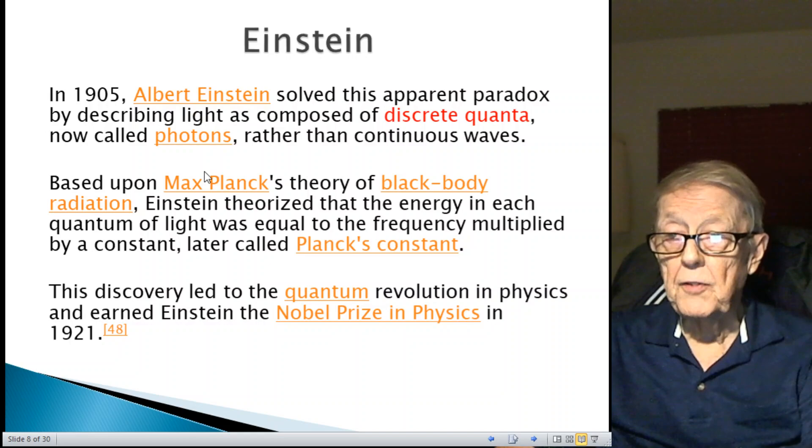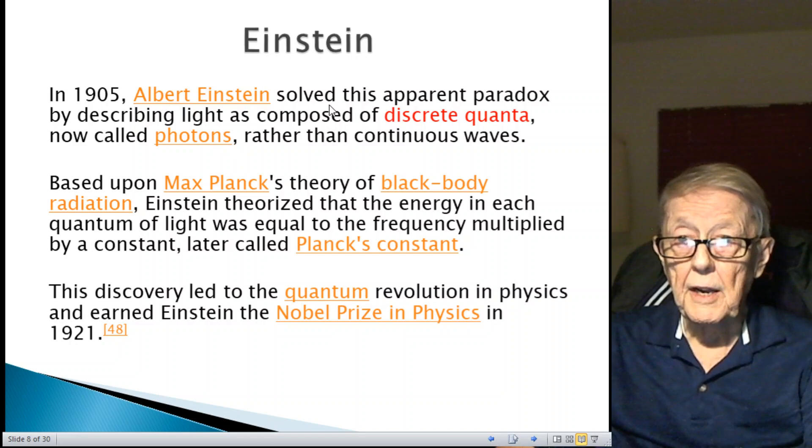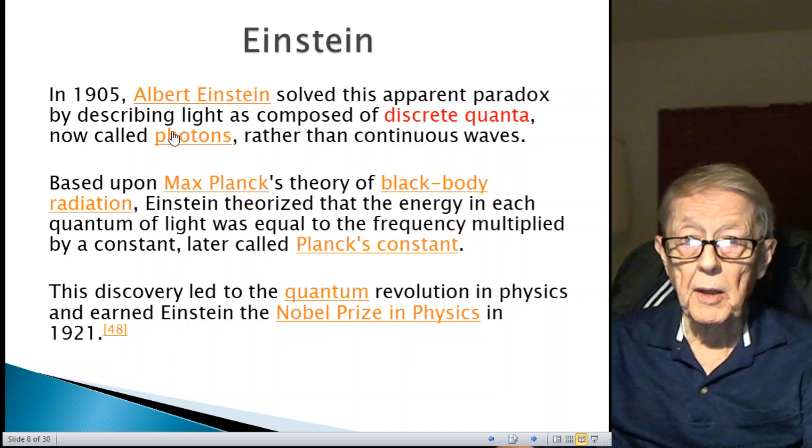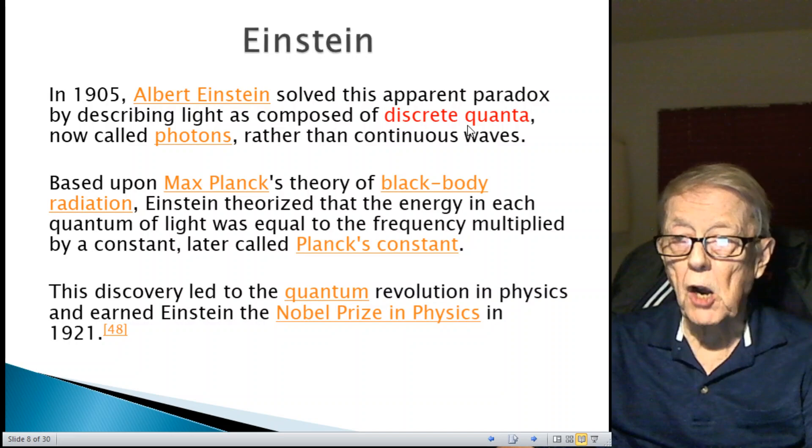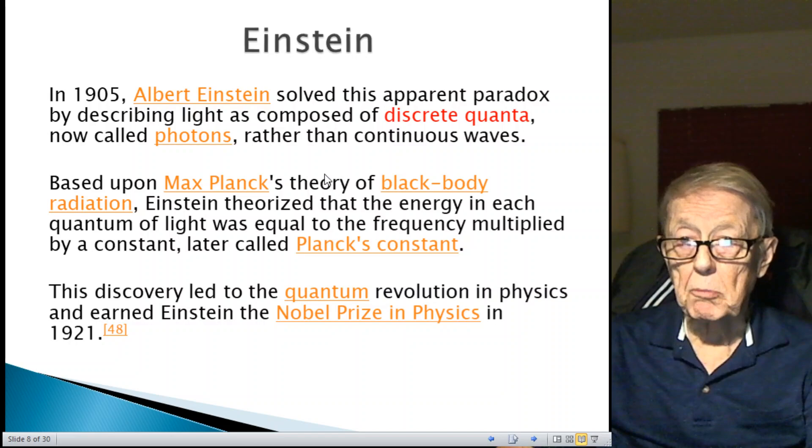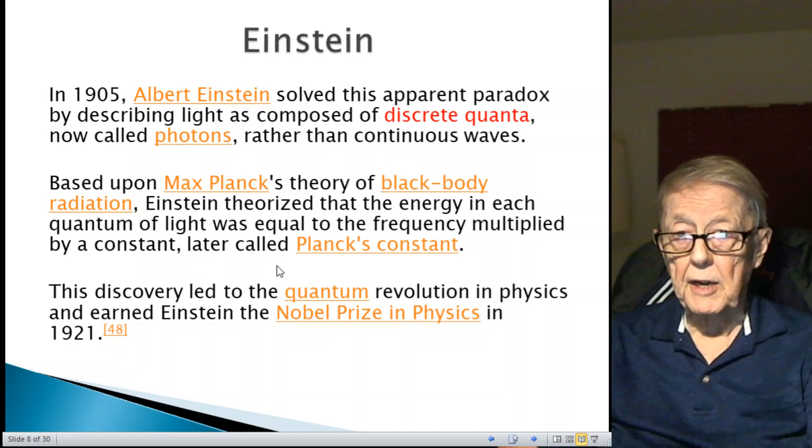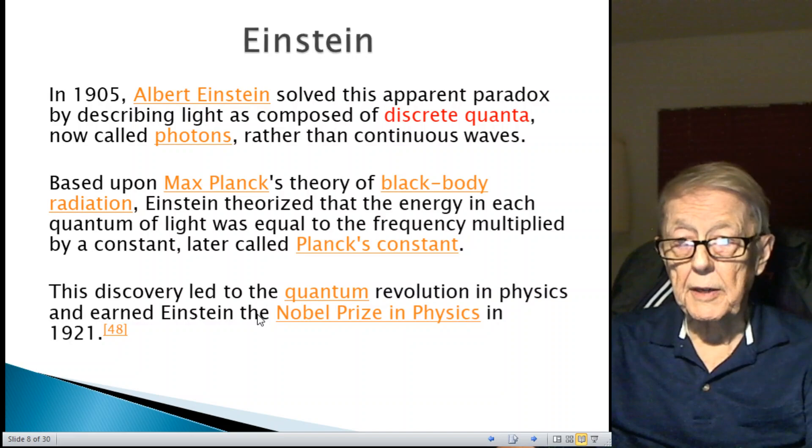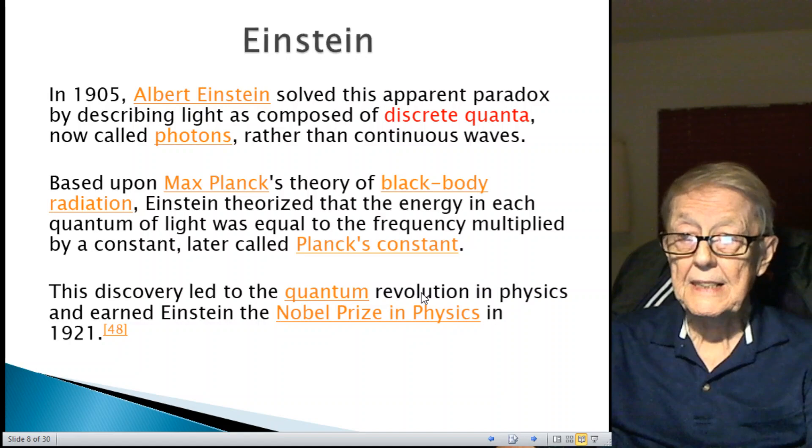So is it frequency or is it intensity? That's part of what we're going to be looking into. This is the energy based on frequency, and this is the intensity measured in watts per square meter. Einstein in 1905 published four papers, and one of them was titled the photoelectric effect. He solved this paradox between intensity and frequency by describing light as composed of discrete quantum, a chunk of energy, which we now call photons, rather than continuous waves. Based on Planck's theory of black body radiation, Einstein theorized that the energy in each quantum of light was equal to the frequency multiplied by a constant, and that constant was later called Planck's constant.